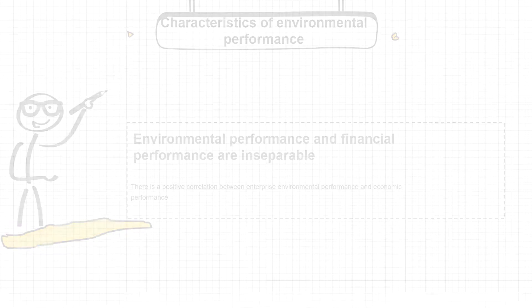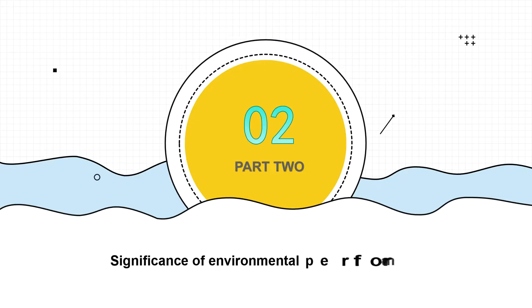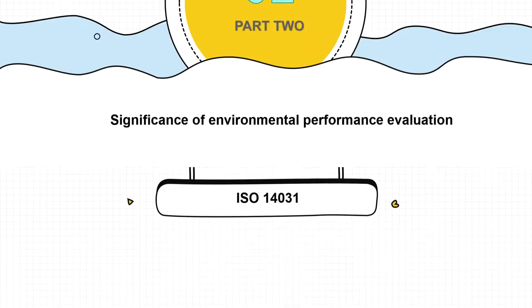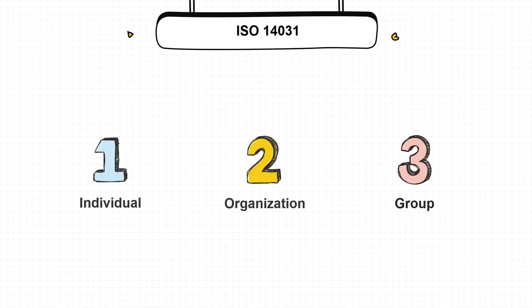The second part is the significance of environmental assessment. Environmental performance evaluation is an integral part of the environmental performance management process, and it is also a reference for internal development. This involves the entire organization of the business, a group and an individual, and all their interests.